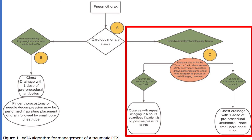They recommend a follow-up chest x-ray in 6 hours for those who are observed. They do state that patients in low-resource situations, or who require prolonged transport times, or those who are unable to be monitored closely — for example, a patient being prone for a lumbosacral spine fixation surgery — we should consider chest tubes placed prophylactically in these situations.